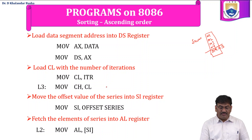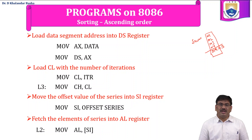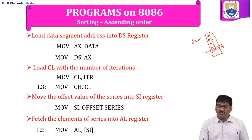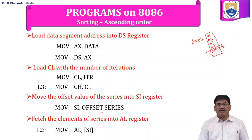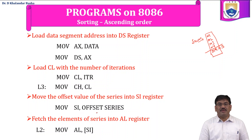The number of iterations is written into the CL register, and the same count is also loaded into CH. CH holds the total number of outer iterations. To fetch the address of the first element, we use the OFFSET directive. The instruction 'MOV SI, OFFSET series' loads the offset value assigned for the series variable into the SI register.